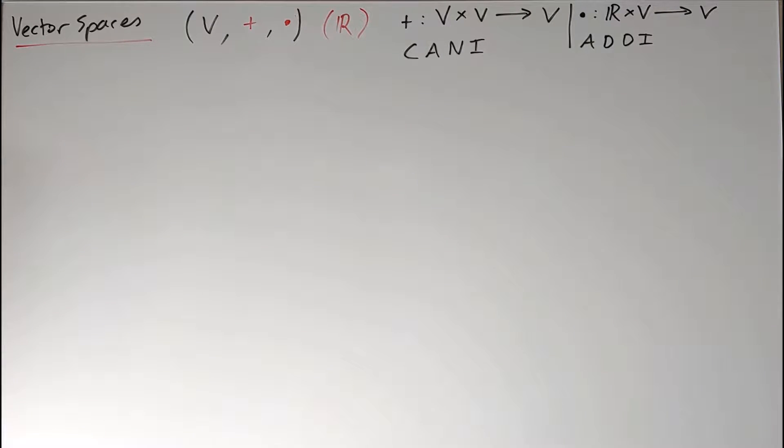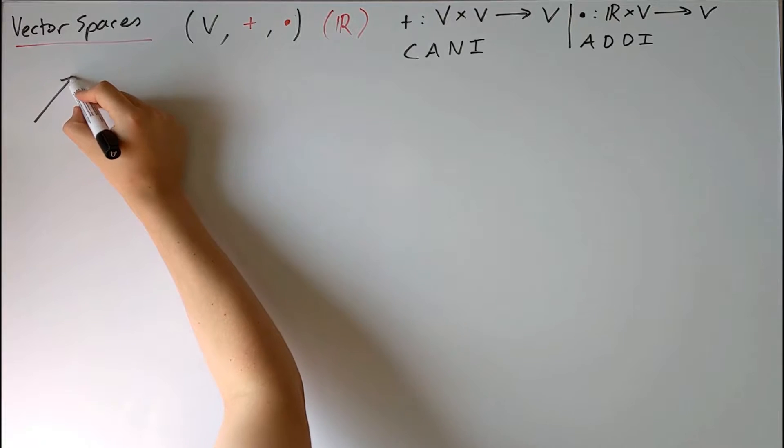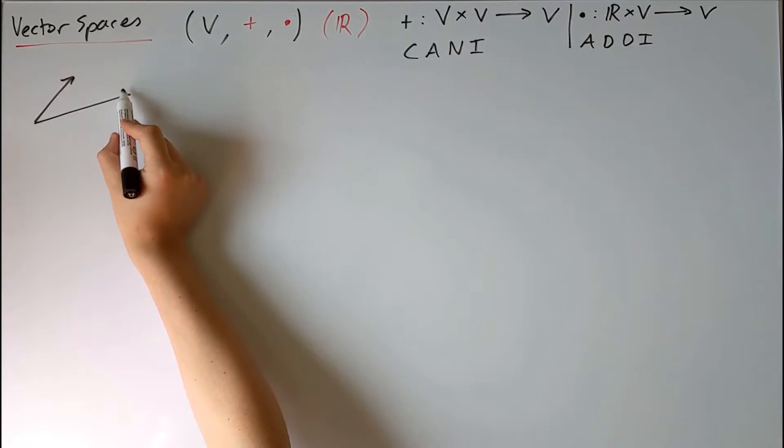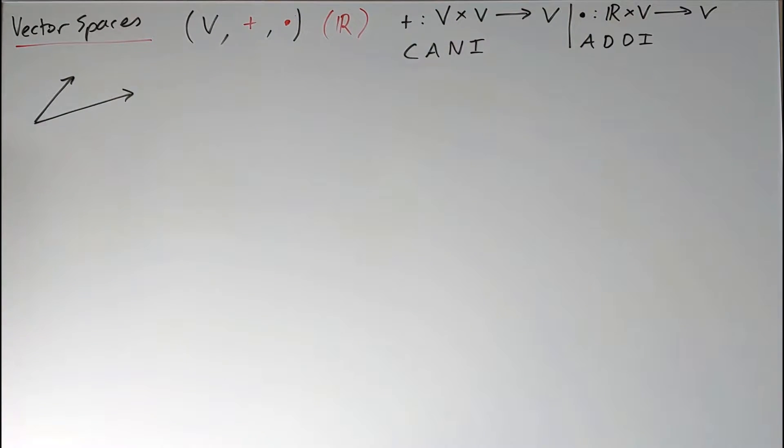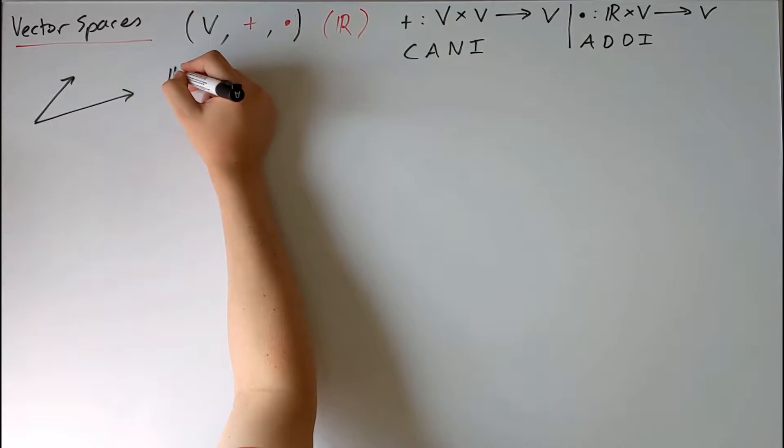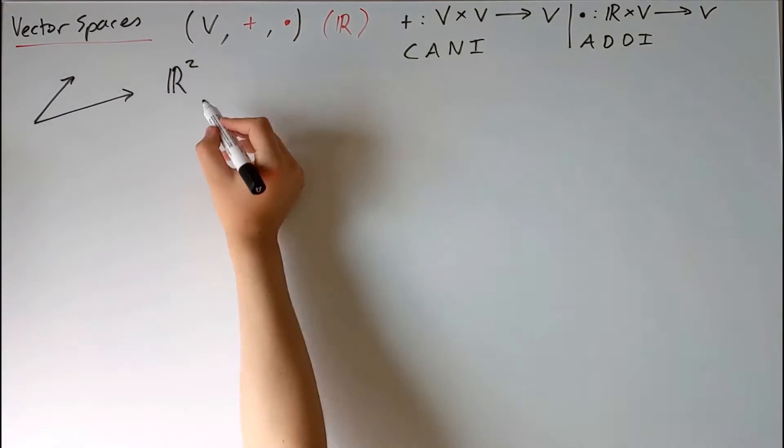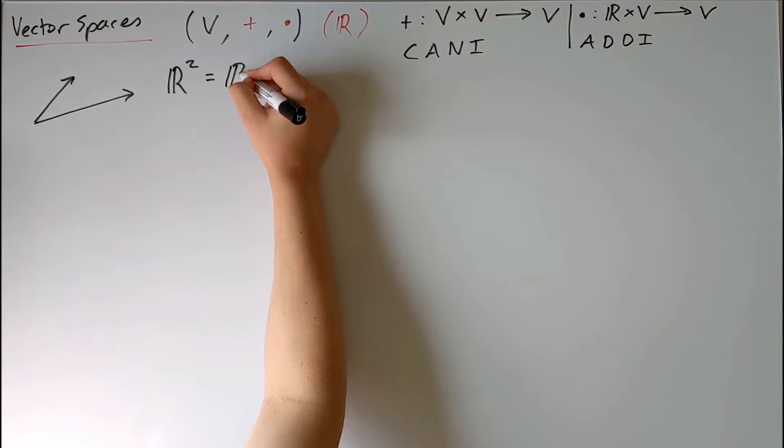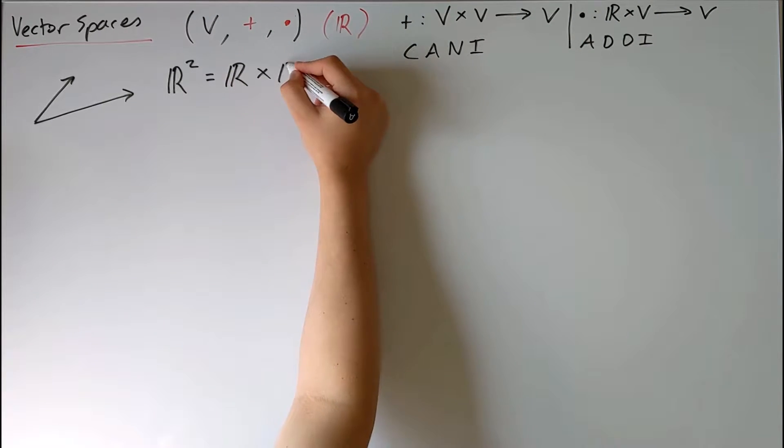So the example I'm going to start with is one which you hopefully should be very familiar with, the regular kind of vectors you might be used to thinking about as arrows. So the set we use for this is the set which I'm going to call ℝ², which simply stands for ℝ Cartesian product with ℝ.